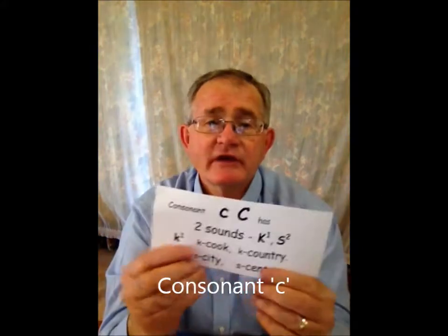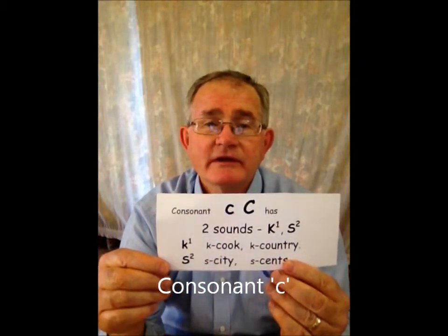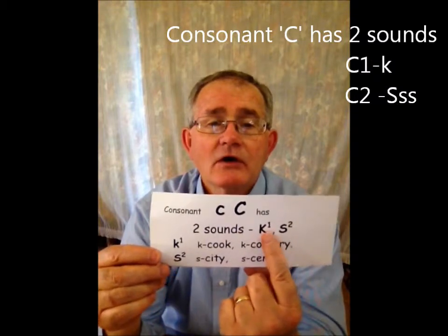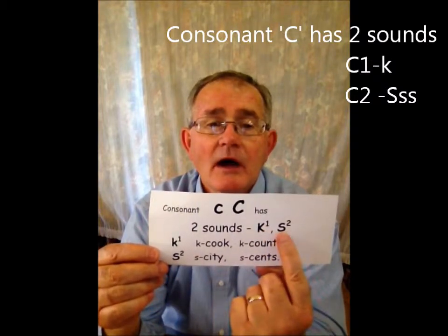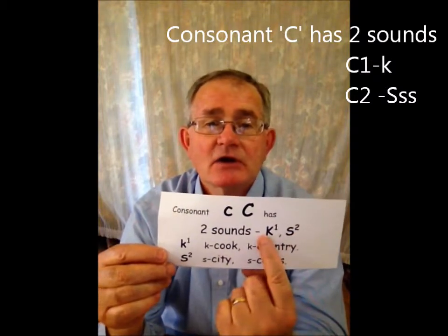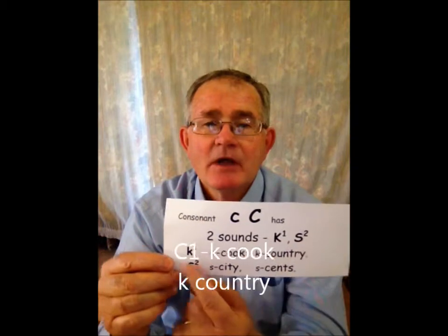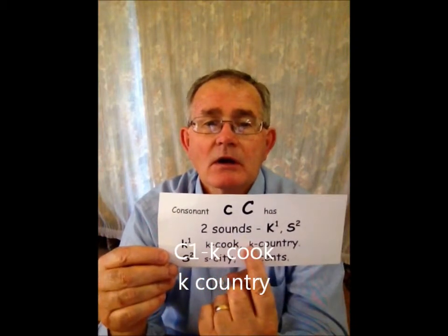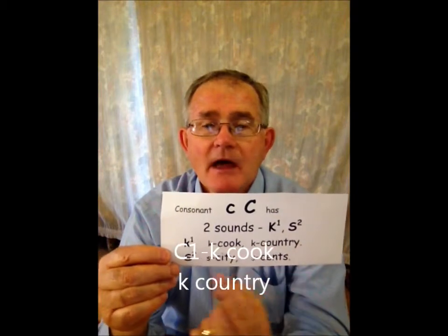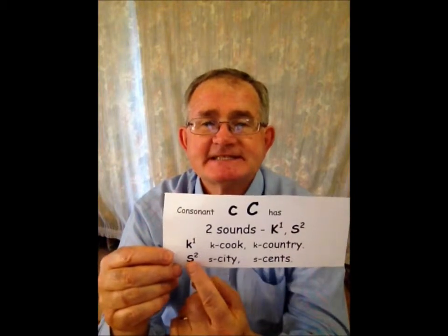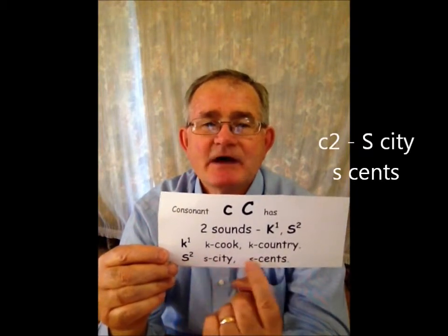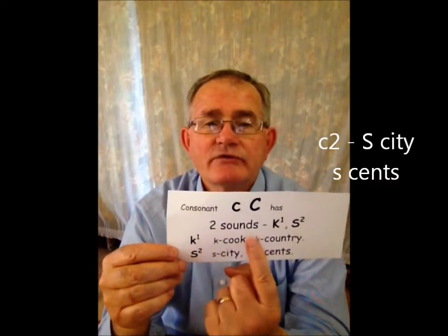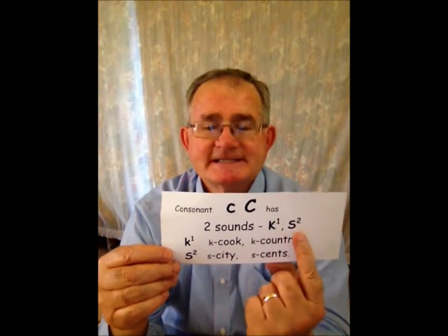Now C — consonant C. C has two sounds: K and S. K — cook. K — country. And S — city. S — sense. So C has two sounds: K and S.